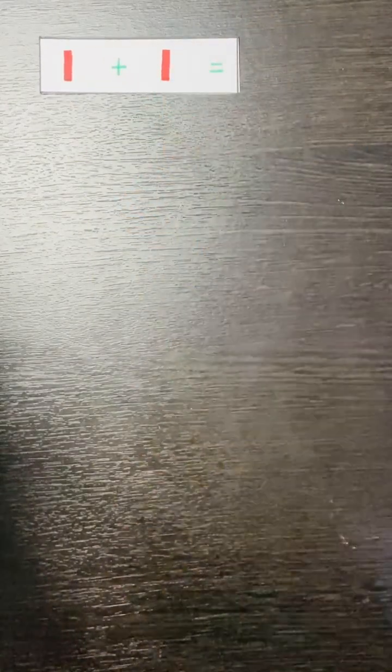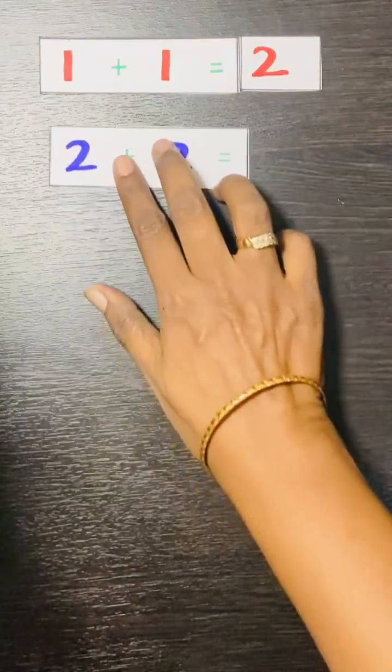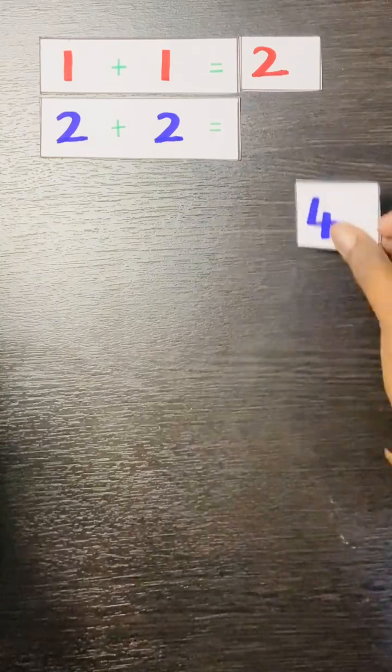1 plus 1. 1 plus 1 is equal to 2. 2 plus 2, that is double the number. 2 plus 2 is equal to 4.